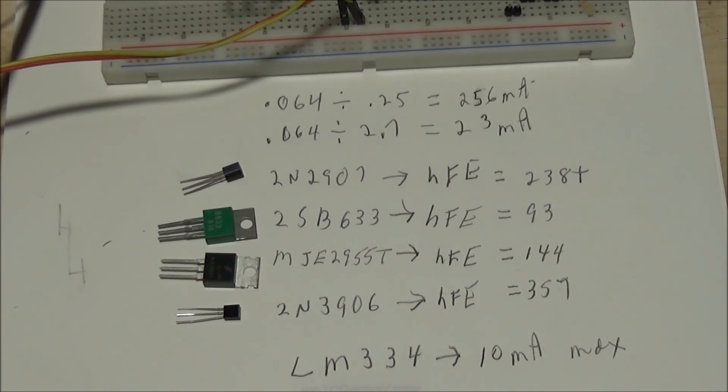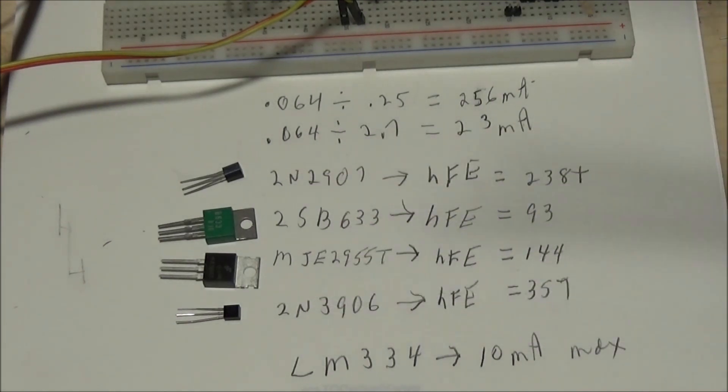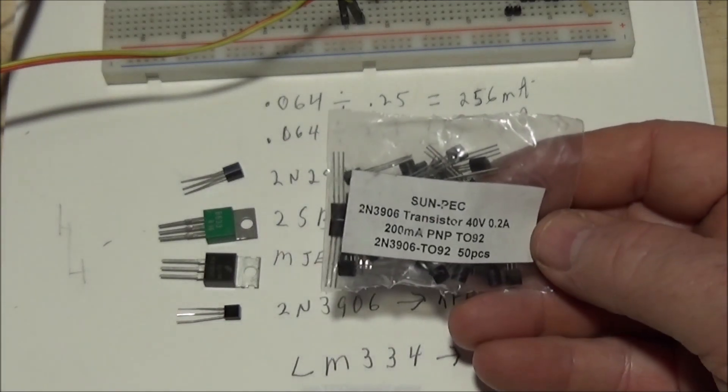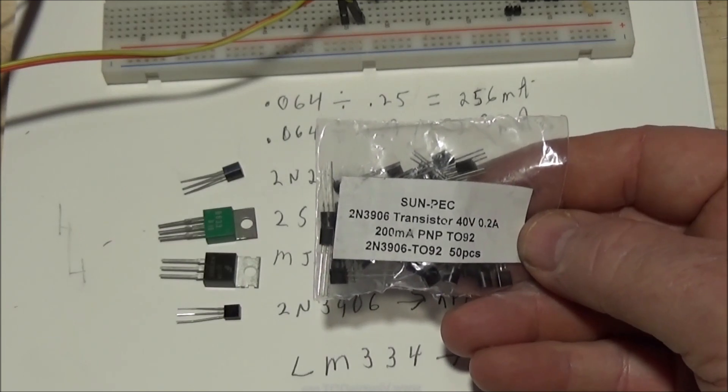The next question is, what if I need more current than these little signal transistors, which are generally 200 milliamps, can supply? The 2N3906, while it's good up to 40 volts, can only sink about 200 milliamps max.